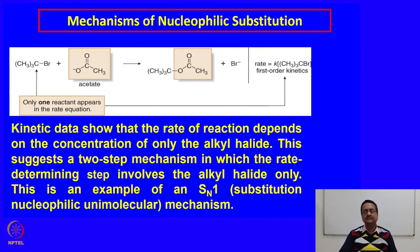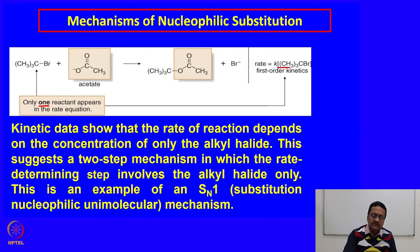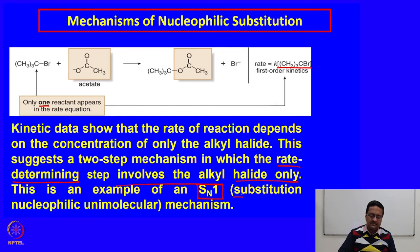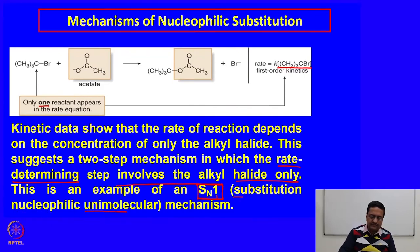In the second process, where bond breaking and bond making happen separately, only one reactant appears in the rate equation. Kinetic data shows that the rate depends only on the alkyl halide concentration. This mechanism suggests a two-step process where the rate-determining step involves only the alkyl halide — the bond-breaking step is the slowest step. We call that reaction SN1, or substitution nucleophilic unimolecular, meaning in the rate-determining step only one molecule is involved.